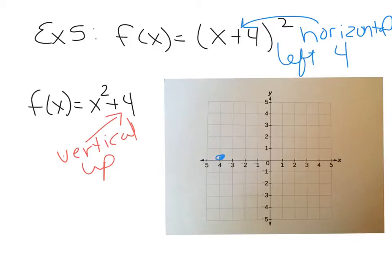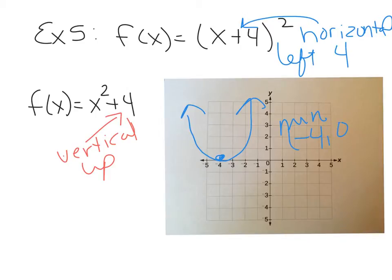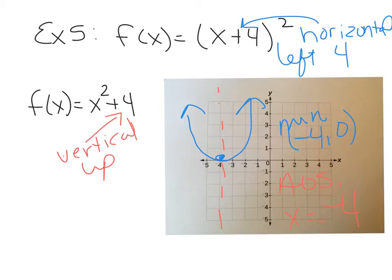So our vertex is now going to be at negative 4. There are no negatives on x squared, so this parabola opens up and the vertex is a minimum. Its coordinates are negative 4, 0. The axis of symmetry is now no longer on the y-axis — it's shifted over, so the equation is x equals negative 4. To summarize: if your plus or minus is outside the square, it's a vertical shift; if it's inside, it's a horizontal shift, and horizontal shifts go in the opposite direction the sign indicates.